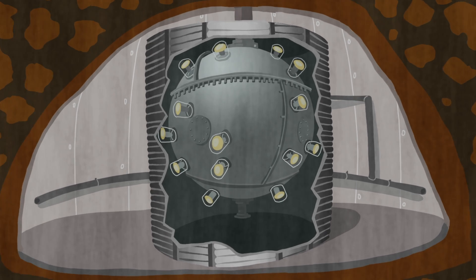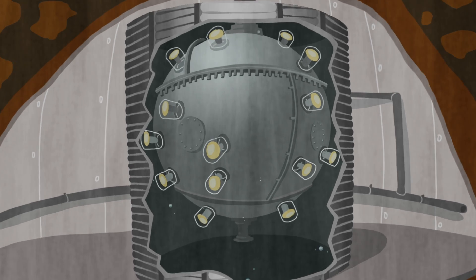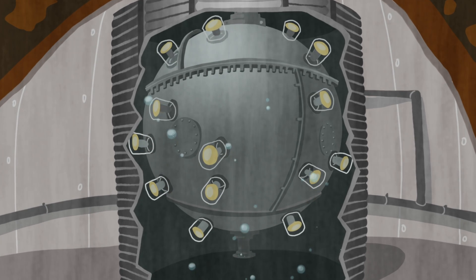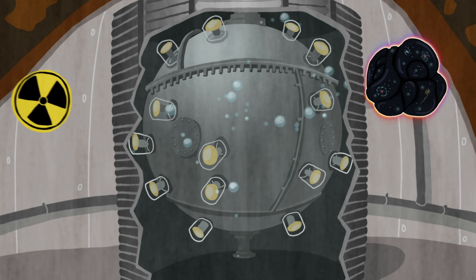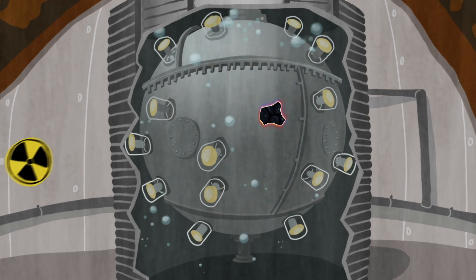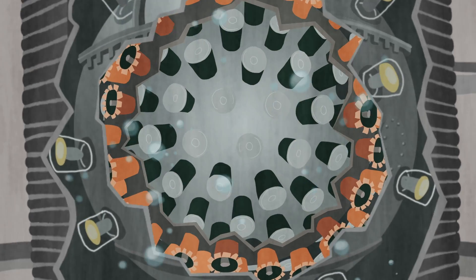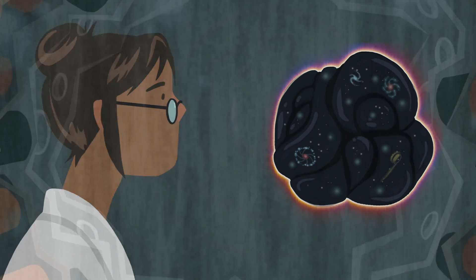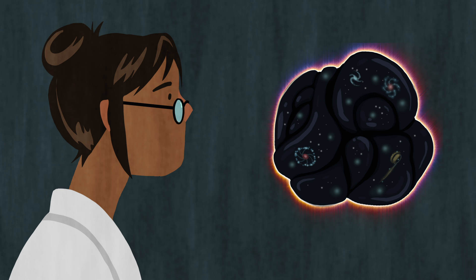The ultra-pure water in which the detector is suspended adds an additional layer of radiation filtering. This shielding ensures that only the particles scientists are looking for can make their way into the detectors. Once these particles reach an experiment's inner vessel, scientists have a chance of detecting them.